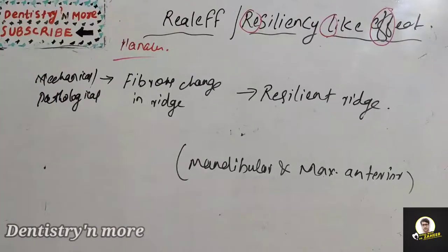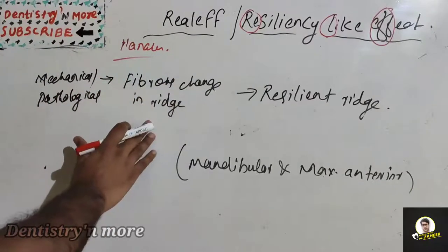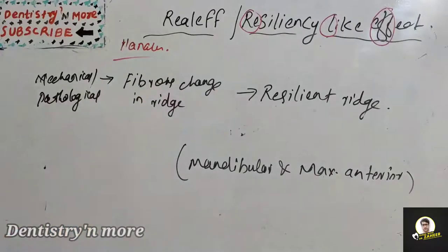When there is mechanical or pathological effect on the residual alveolar ridges, it creates a fibrous change in the ridge which will become the resilient ridge, commonly seen in mandibular region and also in maxillary anterior region.